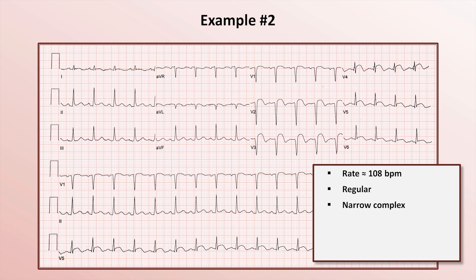It is narrow complex. What about the atrial activity? There are P-waves this time, and they appear to have normal morphology — in particular, they are upright in lead 2 and down-going in lead AVR.